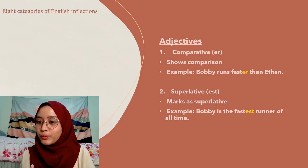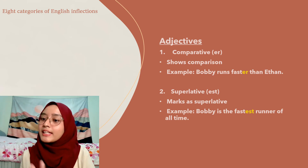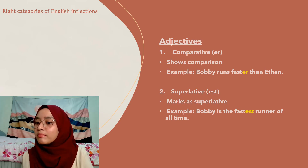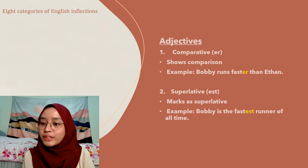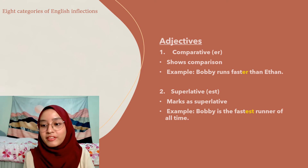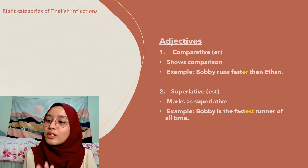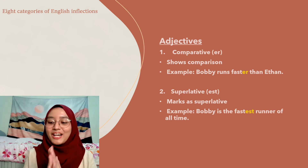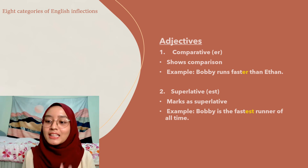For adjectives, we have two categories: comparative and superlative. The comparative inflection marks a comparison and is usually accompanied by the word 'than' — for example: 'Bobby runs faster than Ethan.' The superlative inflection uses the suffix -est — for example: 'Bobby is the fastest runner of all time.'